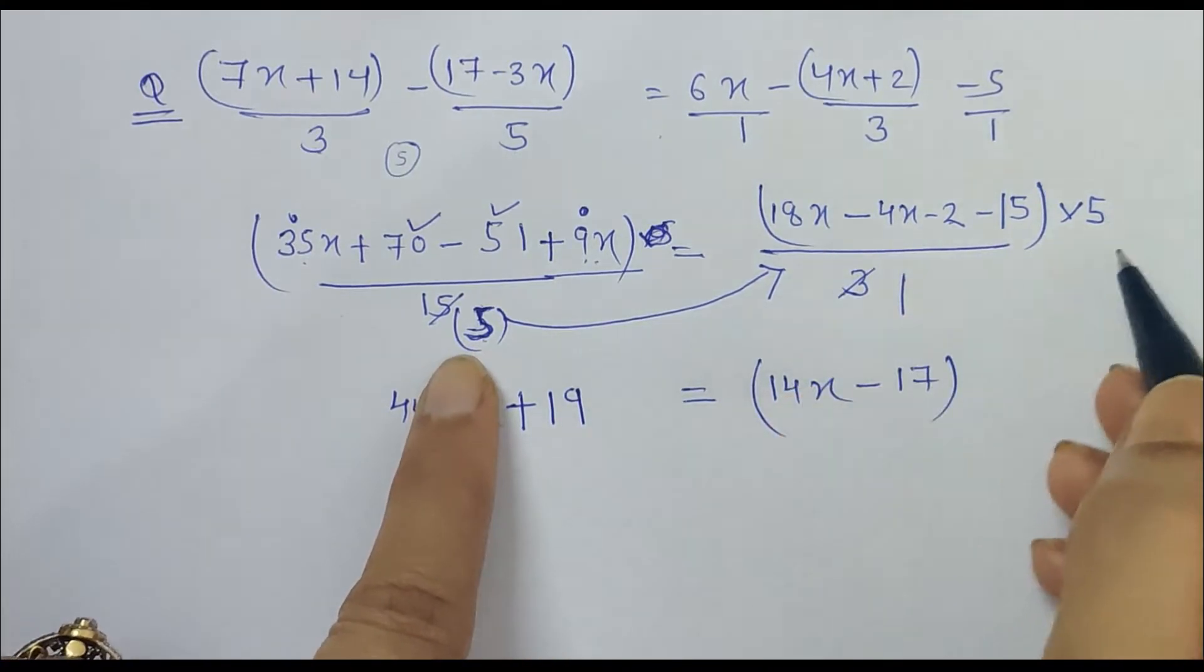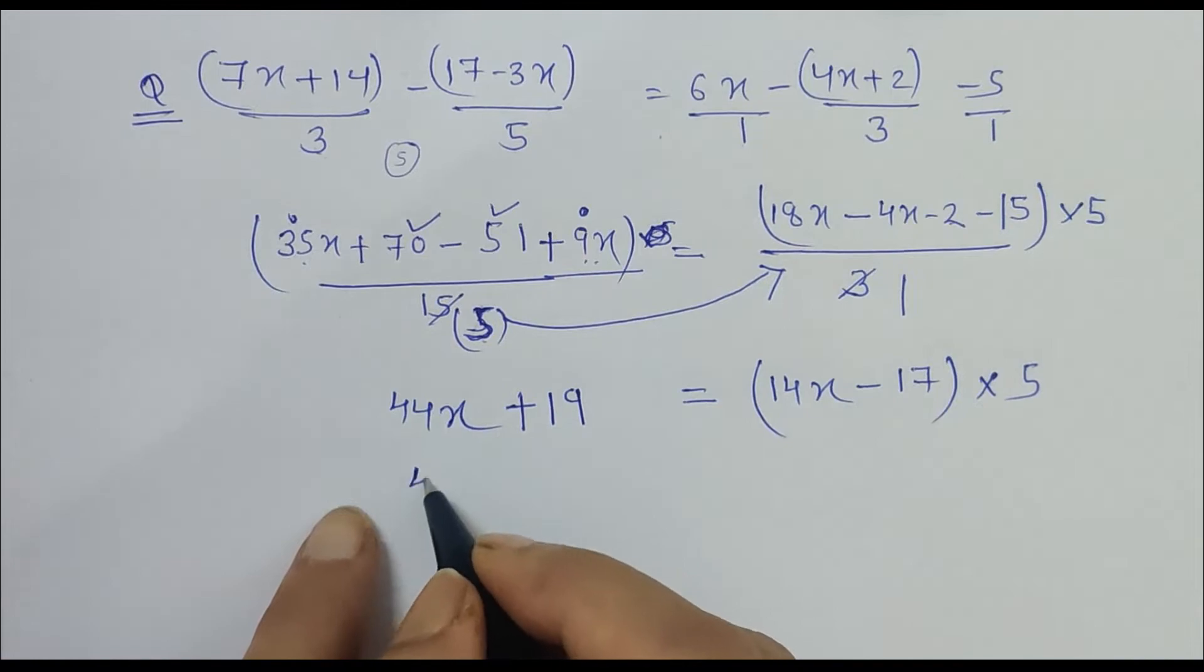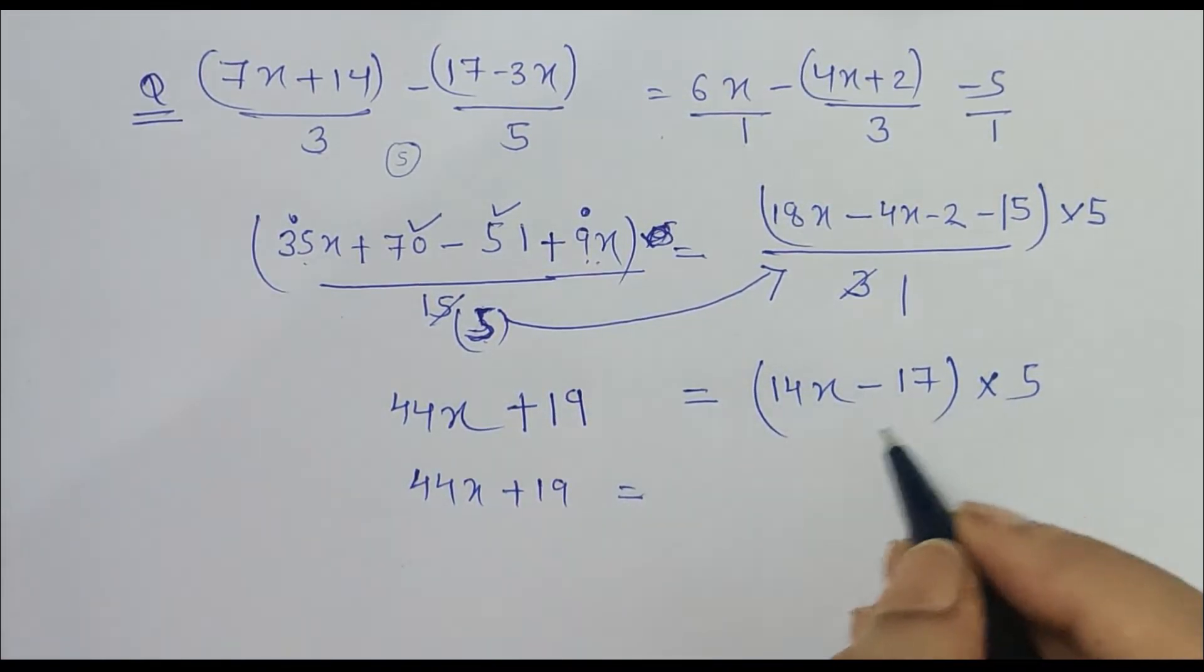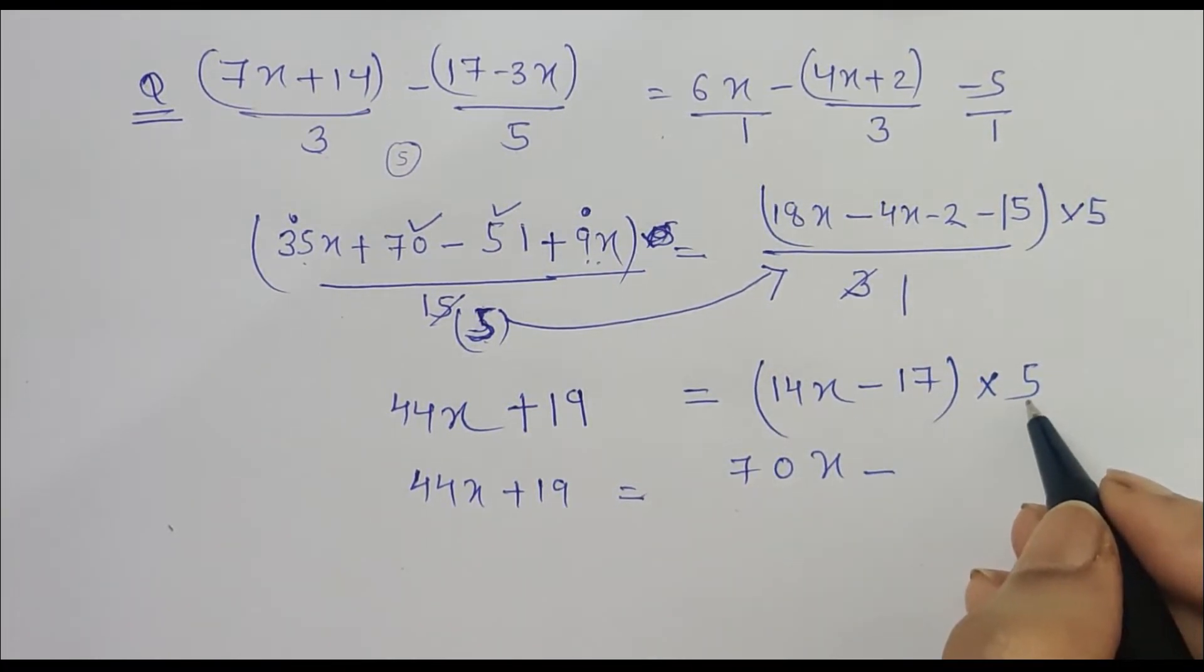Now this 5 which is transferred to the right-hand side is multiplying the numerator. So 44x plus 19 is equal to 14 times 5, which is 70x, minus 17 times 5, which is 85.